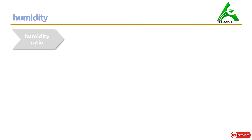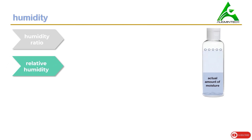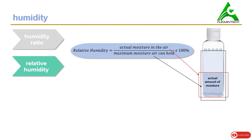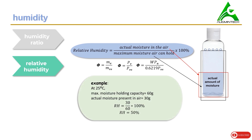Relative humidity is the ratio of actual moisture in the air to the maximum moisture the air can hold, multiplied by 100%. Unlike humidity ratio, relative humidity is related to the maximum amount of water vapor the air can hold. Relative humidity is represented by φ, so φ = MV / MVs, where MV is the mass of actual water vapor and MVs is the mass of maximum water vapor the air can hold. This can also be written as pressure ratios.